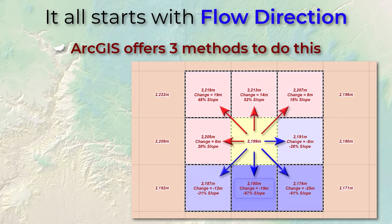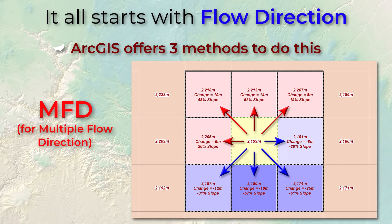The first alternative method is called MFD, for multiple flow direction. It actually sends water into every downslope cell. In this example we see four neighboring cells that are downslope from the central cell, and so this method will actually steer water into all four of those. The one with the steepest slope will get the greatest proportion of flow.